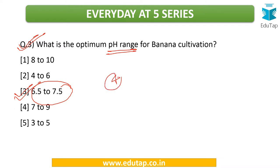The fourth question: what is the propagation method used in banana crops? Obviously there can be two types of reproduction — sexual and asexual. Asexual reproduction is also known as vegetative propagation. You need to tell me which kind of propagation is seen in banana crops. This is a bit interesting, so we will discuss that in the next lecture. Till then, kindly attempt this question.